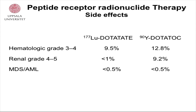A few words about side effects with PRRT: hematological side effects grade 3 to 4 occur in about 10%. In patients treated with yttrium, about 9% had severe permanent renal insufficiency — which is important to know. We don't use yttrium at all; we only use lutetium. Severe blood malignancies are unusual with both these treatments.